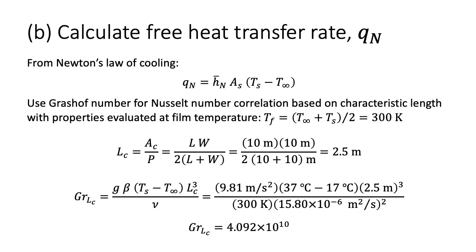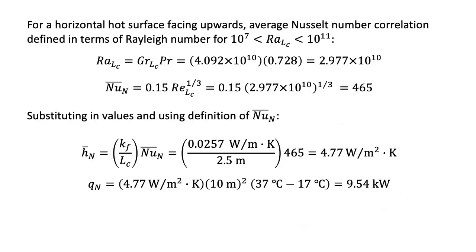For Part B, to calculate the heat transfer rate from the roof, we again use Newton's law of cooling, assuming natural convection only. We begin by calculating the Grashof number based on a characteristic length for the roof as defined. Using properties evaluated at the film temperature of 300 Kelvin, substituting in values we get a Grashof number of about 4 times 10 to the 10th. We then select a valid average Nusselt number correlation in terms of the Rayleigh number for a hot surface facing upwards. Substituting in values, we get a Nusselt number of 465, a convection coefficient of 4.77 watts per meter squared kelvin, and a heat transfer rate of 9.54 kilowatts — higher than both laminar and turbulent forced convection results and of the same order of magnitude.